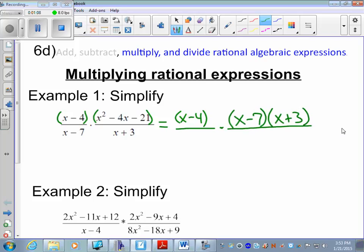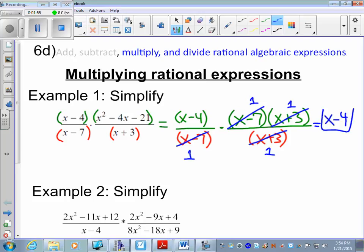The numerators are separately factored. Then go to the denominators, x minus 7 and x plus 3 can't be factored any further. After everything is factored with multiplication, we look at what numerator and denominator are similar that we can cancel. x minus 7 divided by x minus 7 is 1, x plus 3 divided by x plus 3 is also 1. Your final answer is just x minus 4.